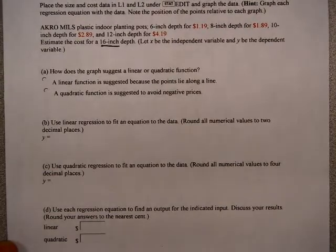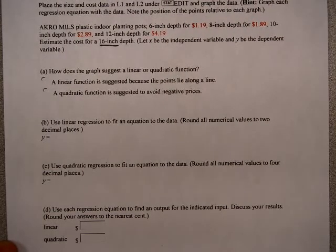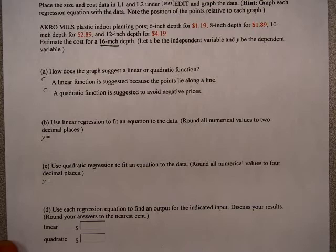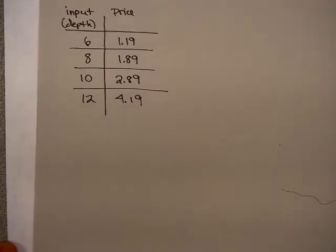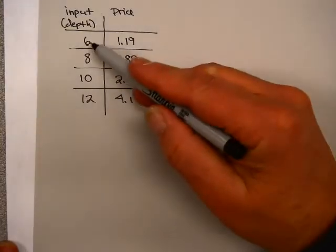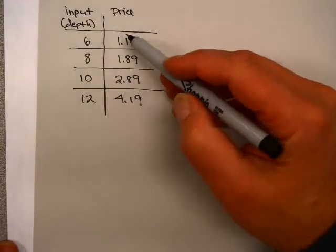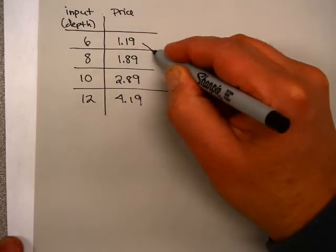How does the graph suggest a linear or quadratic function? Rather than graph this on my calculator, I think I'm going to make a little table here: input and price. So the input is the depth, and the output is the price.